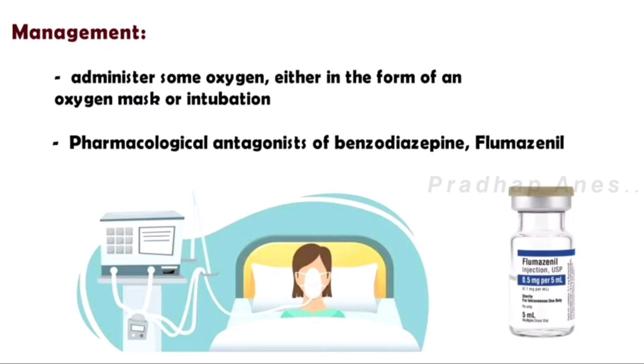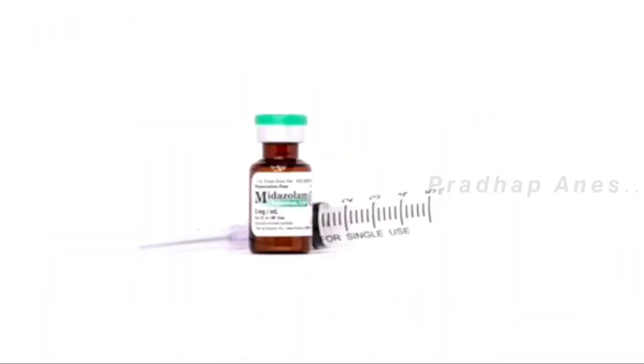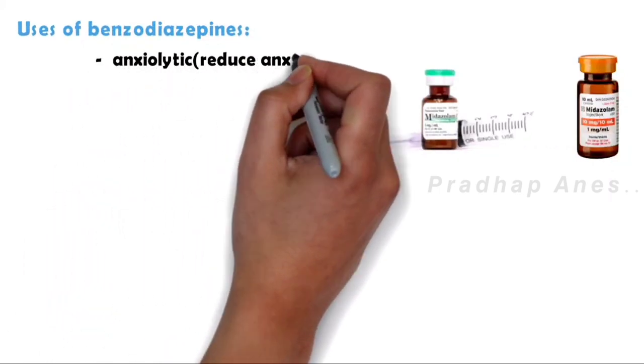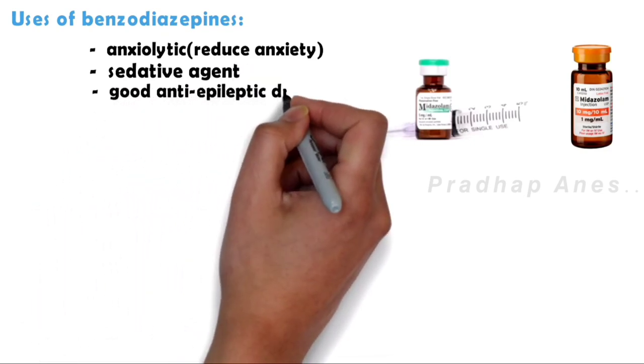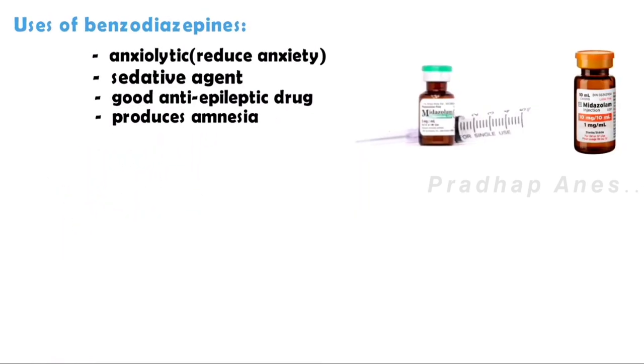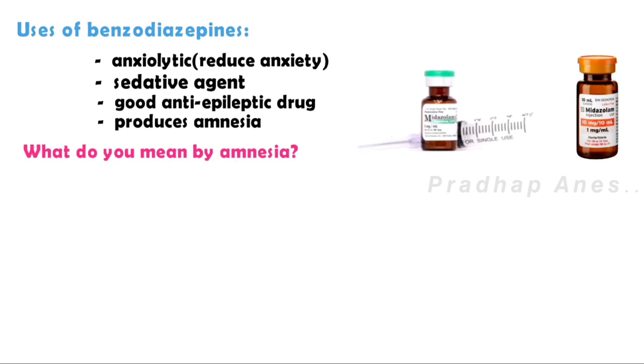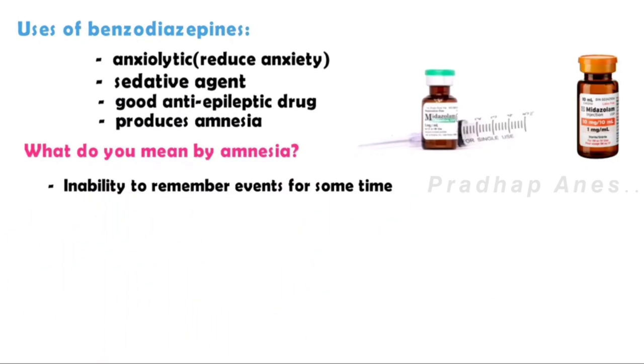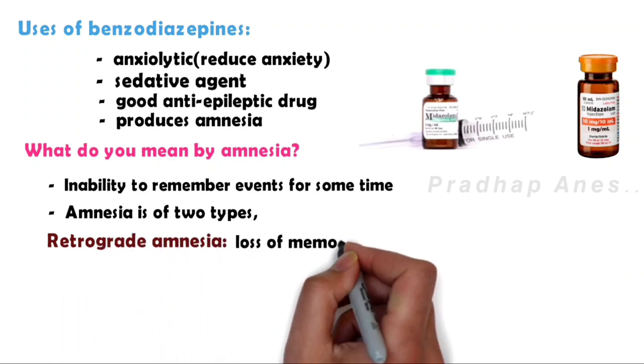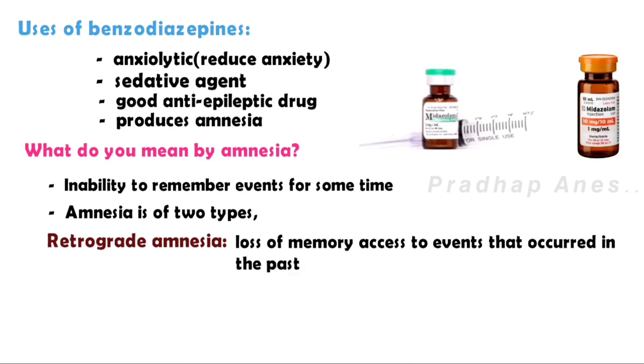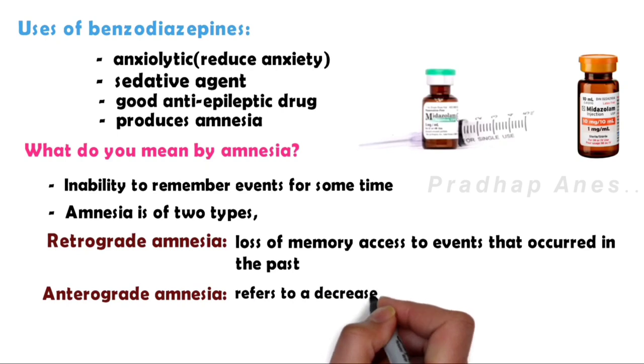Advantages and uses of benzodiazepines: First is anxiolytic, reduces anxiety. Second is a sedative agent. Third is it is a good anti-epileptic drug. Fourth is it produces amnesia. What do you mean by amnesia? It is an inability to remember events for some time. We don't want the patient to recollect the things that have happened in the operation theater because it can cause psychological problems, so he should have amnesia. Amnesia is of two types: retrograde amnesia, a loss of memory access to events that occurred in the past; and anterograde amnesia, which refers to a decreased ability to retain new information.